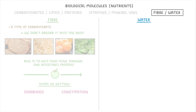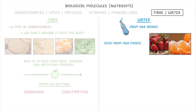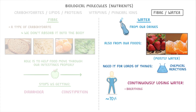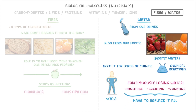Meanwhile, water is just normal water, so we get it from our drinks and also from most foods. For example, oranges and strawberries are mostly water. We need water for loads of things in the body, including chemical reactions, but the main thing is that most of our body is made of water — in fact we're about 70% water. And we're also continuously losing water by breathing, sweating, and urinating, so we're constantly having to replace it all.